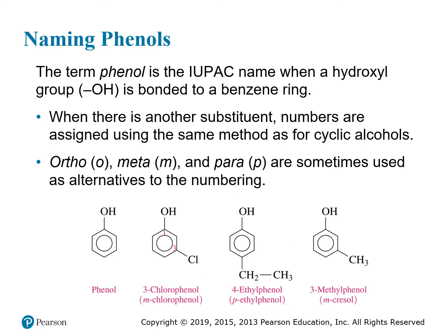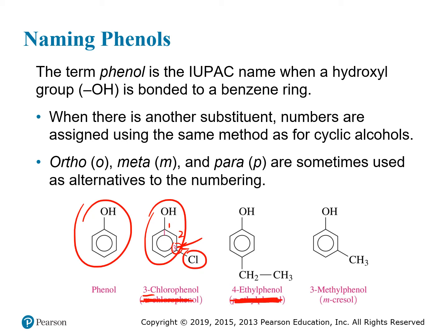Phenols have a benzene ring with a hydroxyl attached. If that's the only substituent, no numbering is necessary — you never need to indicate the one for the OH position on phenol. It's always just 'phenol' and then a substituent with a number. Here we see a chloro group in addition to the hydroxyl. We always start with 1 at the position of the hydroxyl group and count the shortest distance, giving us 3-chlorophenol. Ignore the common names in parentheses for this course.